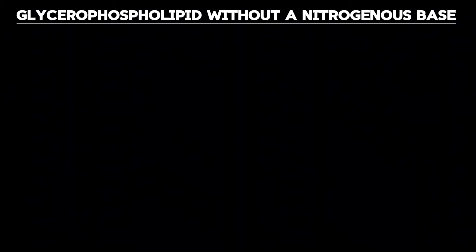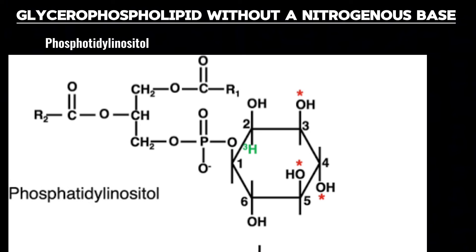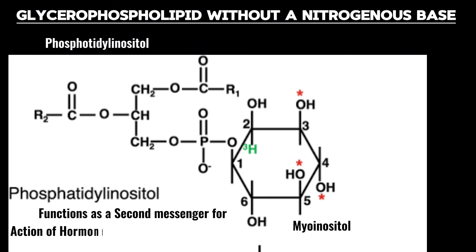Now let us look at the glycerophospholipid without a nitrogenous base. The first is phosphatidylinositol: two fatty acids are attached to glycerol at the C1 and C2 positions, and at the C3 position it is attached to a phosphate group, which is then attached to myo-inositol. They act as a second messenger for the action of hormones such as oxytocin and vasopressin.